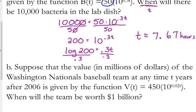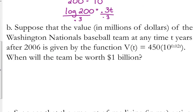Let's look at example B, which is a baseball problem. It says suppose that the value in millions of dollars of the Washington Nationals baseball team at any time t years after 2006 is given by the function V(t) equals 450 times 10 to the 0.02t. When will the team be worth $1 billion?